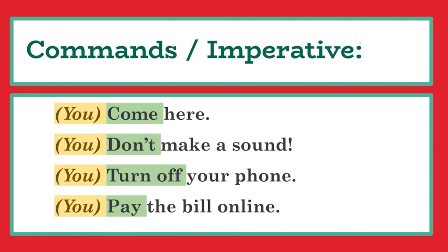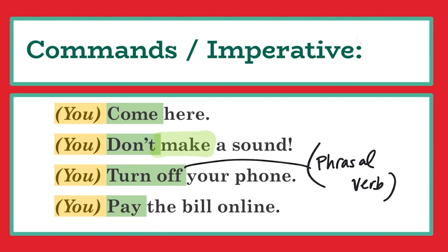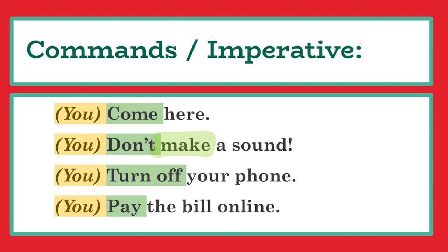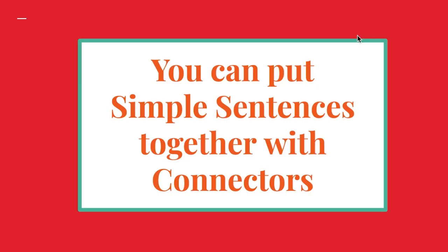There is a special type of sentence called a command or imperative, where you tell a person what to do. When I say 'come here,' the subject is you — it's invisible. It's not in the sentence. I might say 'don't make a sound.' The subject is you. 'Turn off your phone.' The subject is you. 'Pay the bill online.' The subject is you. We do not hear it, write it, or say it, but the subject we understand is you. So, one subject, one verb.